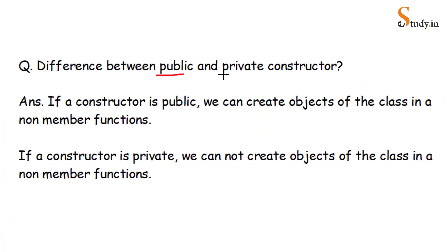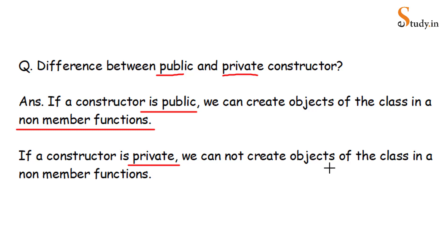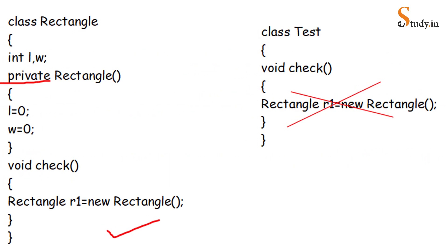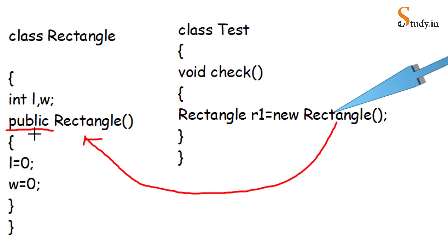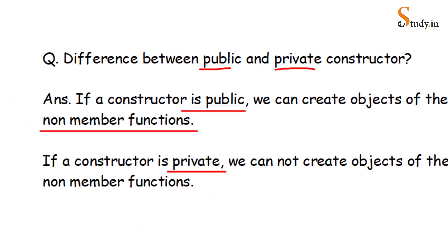So what is the difference between a private and a public constructor? If a constructor is public, we can create objects of the class in non-member functions — that means functions which are part of another class. But if the constructor is private, we cannot create objects in non-member functions. In the previous example with the private constructor, the object was created inside a member function of the Rectangle class. Check is a non-member function — it is part of the Test class, not the Rectangle class.